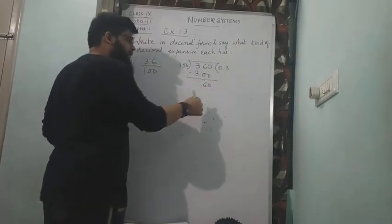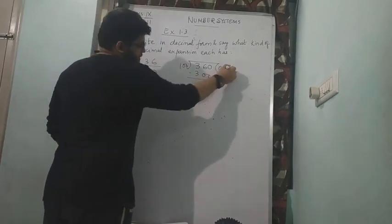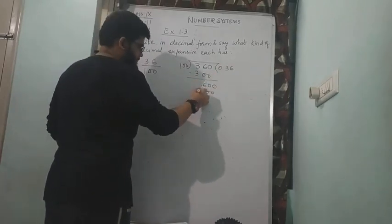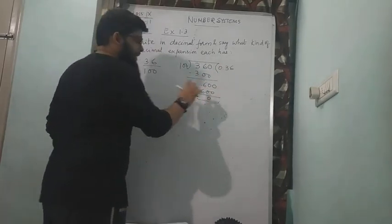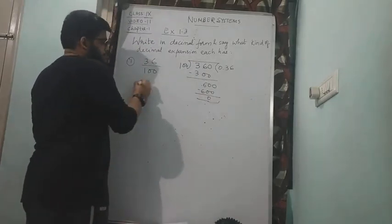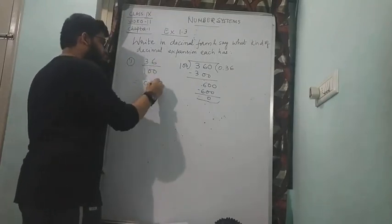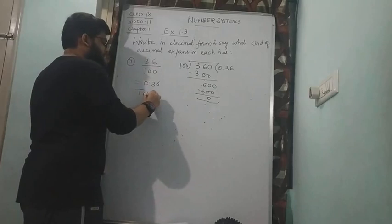Once I have taken 0 and point, I can take one more 0 here. So 100 times 6 is 600. Remainder has become 0. Because the remainder has become 0, the answer will be 0.36 for this one, and because the remainder is 0, you will tell it is terminating.